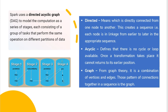DAG is Directed Acyclic Graph that Spark uses basically to model the computation as a series of stages, each consisting of a group of tasks that perform the same operation on different partitions of data. Simply in this case, we can say DAG creates a physical and logical plan of execution of tasks on different nodes.